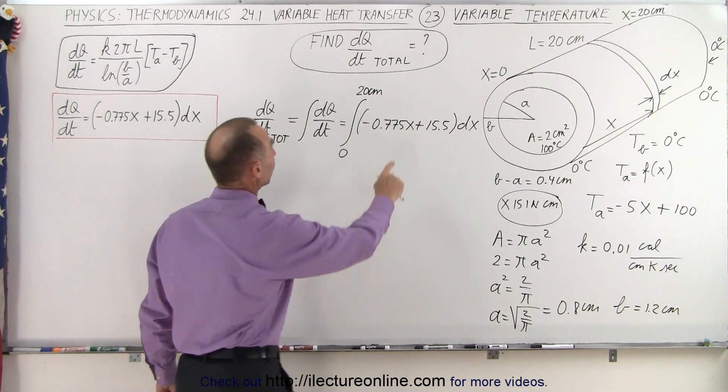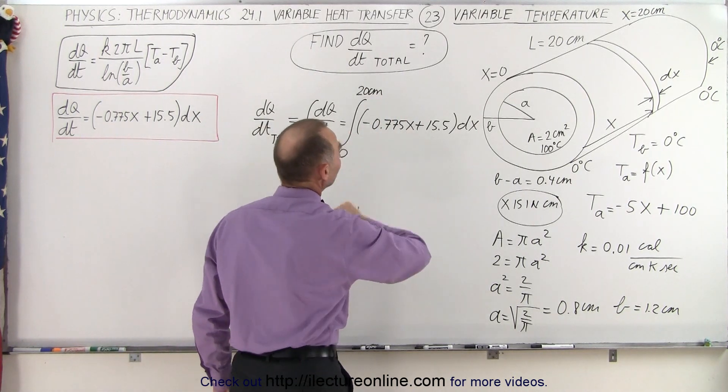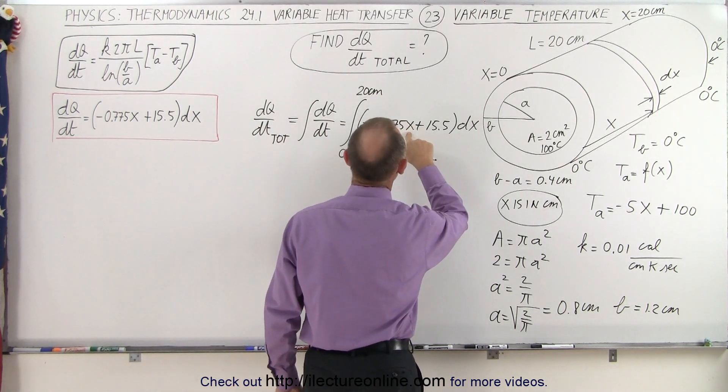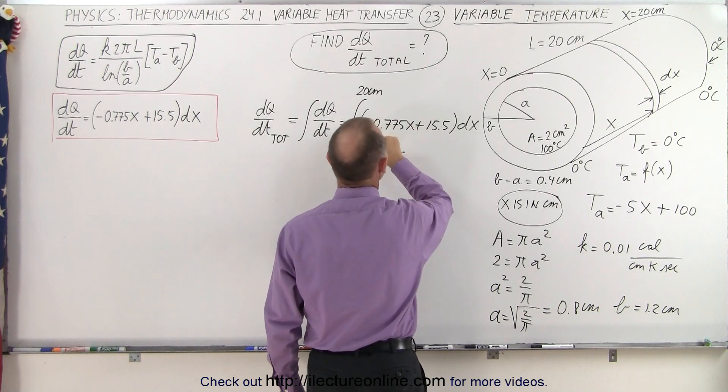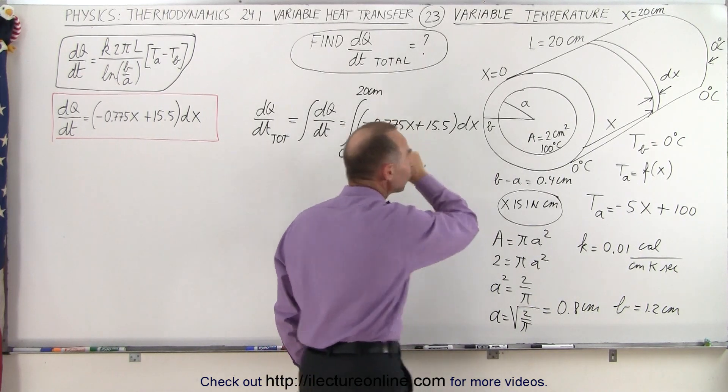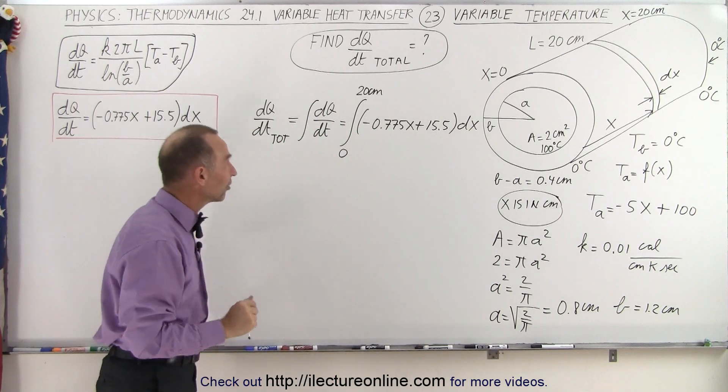Now what are the units of this right here? Well, if we put in 20 here, 20 times this gives us a minus 15.5, so this is all in terms of centimeters, so we'll stay consistent.